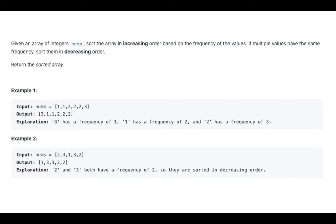Given an array of integers nums, sort the array in increasing order based on the frequency of the values. If multiple values have the same frequency, sort them in decreasing order. Return the sorted array.